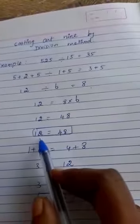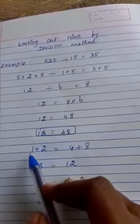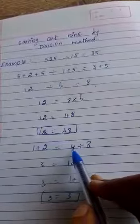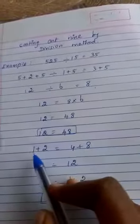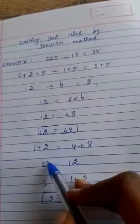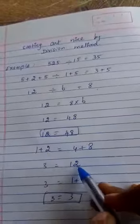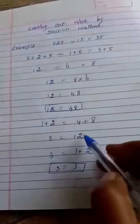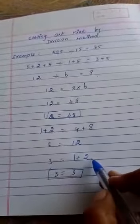Again it is a 2-digit number, so I split it up: 1 plus 2 equals 4 plus 8. Here 1 plus 2 equals 3. 4 plus 8 equals 12. Again we get a 2-digit number, so split that up: 1 plus 2 equals 3. Now 3 equals 3.